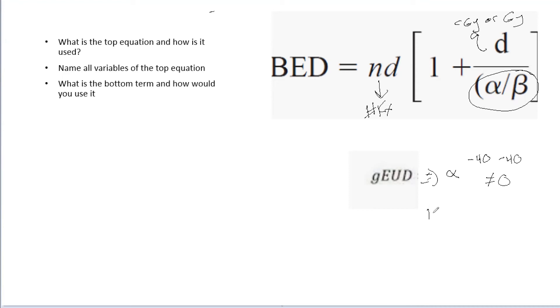So if you have a low alpha value, this is going to be something like a parallel organ. Now, if the opposite is true and you have a high alpha value, that's going to be a serial organ, something you really want to protect and that you can't exceed that dose limit for.